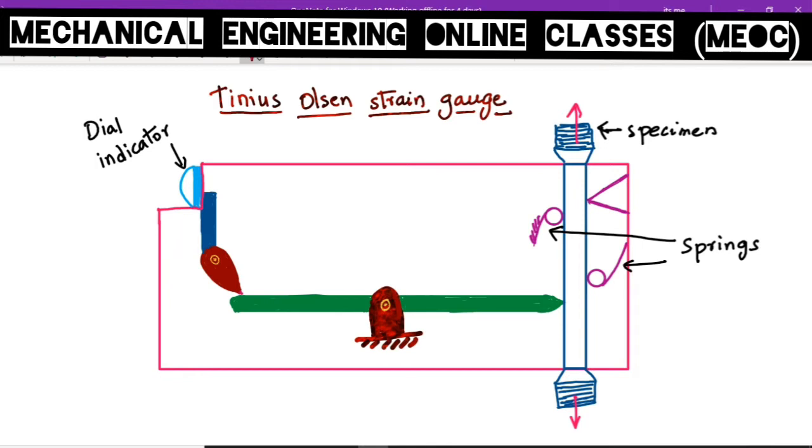In the Tinius Olsen strain gauge we have a lever which can be rotated about this fulcrum. One end of the lever is in contact with the test specimen and the other end is connected to another arm. The plunger of the dial gauge is connected to this arm.